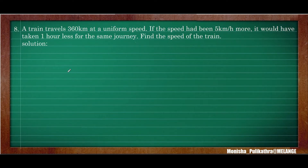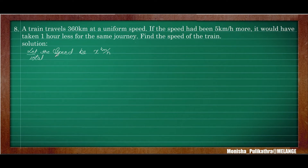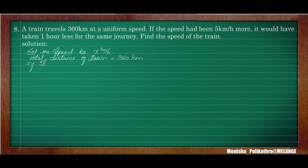Moving on to the 8th problem. A train travels 360 kilometres at a uniform speed. Let the speed be x kilometres per hour. If the speed had been 5 kilometres per hour more, it would have taken 1 hour less to reach the journey. They have asked to find the speed of the train.